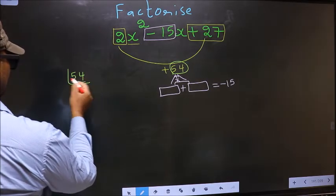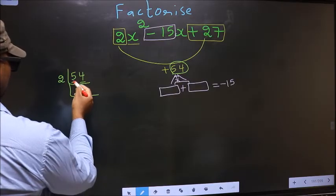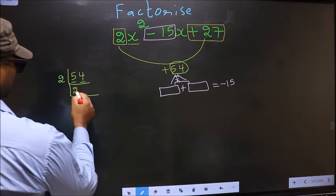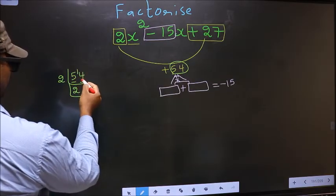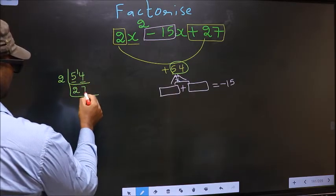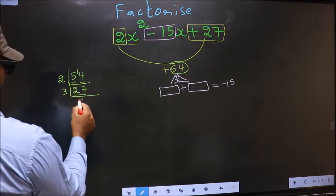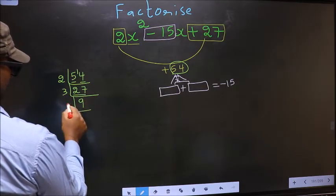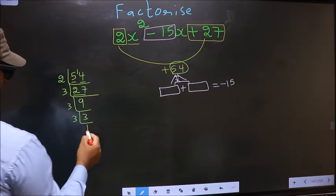The last digit 4, even, so take 2. The first number 5. A number close to 5 in 2 table is 2 times 2 is 4. 5 minus 4, 1, 1 carried forward 14. When do we get 14 in 2 table? 2 times 7 is 14. Now here 27, 27 is 3 times 9 is 27. Now 9 is 3 times 3 is 9. Now 3, 3 is a prime number, so 3 times 1 is 3.